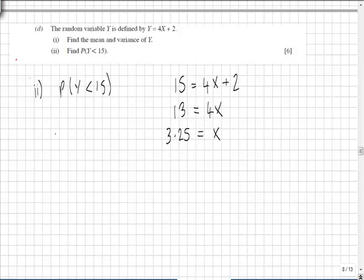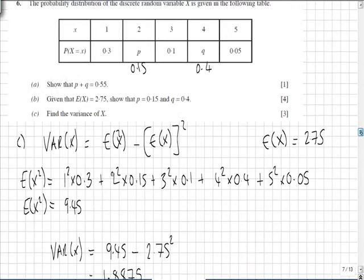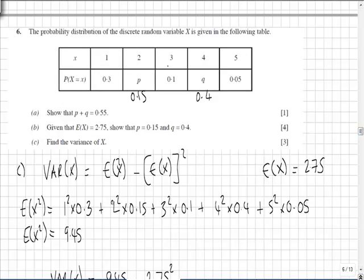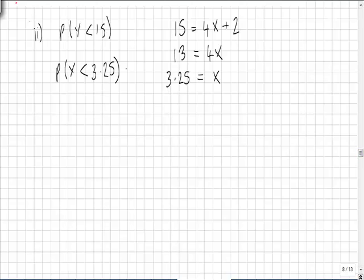So when Y is less than 15 is the same as when X is less than 3.25. If we look at our original distribution, we can see that X less than 3.25 would be 3, 2, and 1. Which is 0.1, 0.15, and 0.3 respectively. So that would give a summation to 0.55.